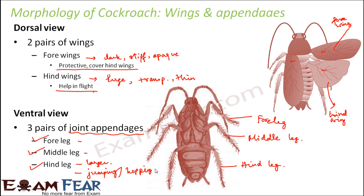All three pairs of legs arise from the thorax region. The foreleg arises from the prothoracic region, so it is also called the prothoracic leg. Similarly, the middle leg is also called the mesothoracic leg. These names simply reflect the thoracic segment from which each leg arises.